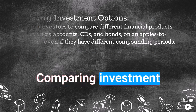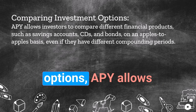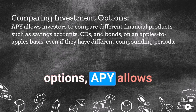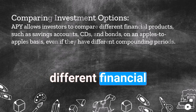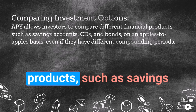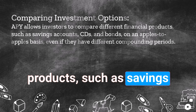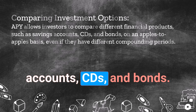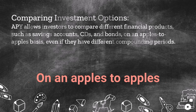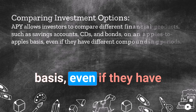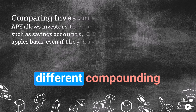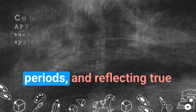Comparing investment options: APY allows investors to compare different financial products, such as savings accounts, CDs, and bonds on an apples-to-apples basis, even if they have different compounding periods.